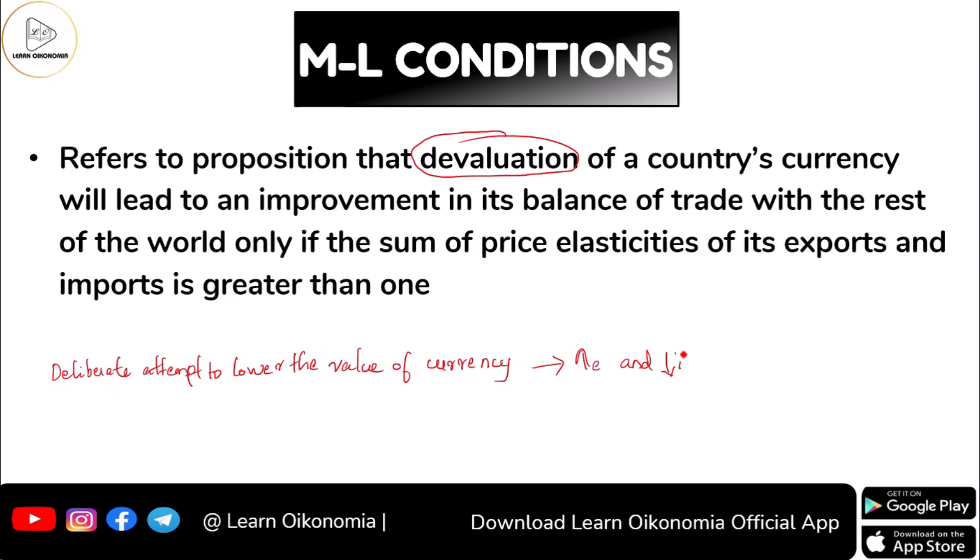What are the points told by Marshall and Lerner with respect to devaluation of a nation's currency? As per these two people, devaluation will lead to an improvement in balance of trade only if one condition is satisfied. What is this famous condition which needs to be satisfied so as to have an improvement in the balance of trade when devaluation occurs?